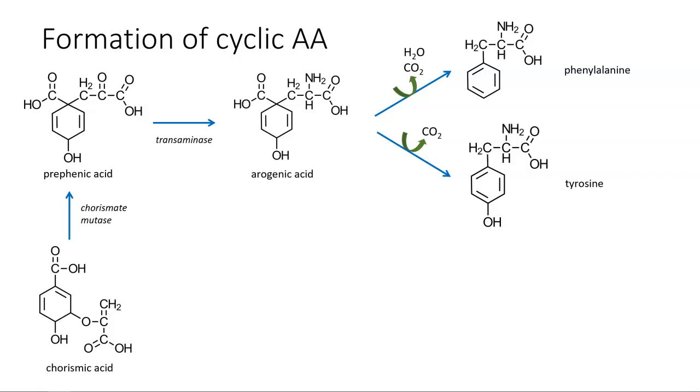The products of the shikimic acid pathway will lead to the synthesis of tryptophan. Both of these are cyclic amino acids as they have a benzene ring in the R-group. This pathway is not found in animals, which must obtain these amino acids from their diet.